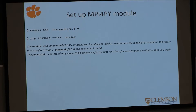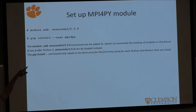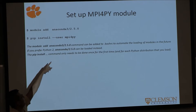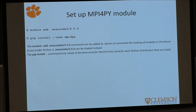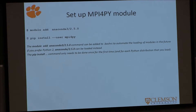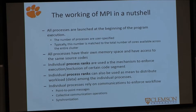The next step is to set up your MPI for Python module. From your terminal, type 'module add' followed by 'phys/250'. You can also add it to the .bashrc. Then type 'pip install --user mpi4py'. Okay, switch back to lecture mode.